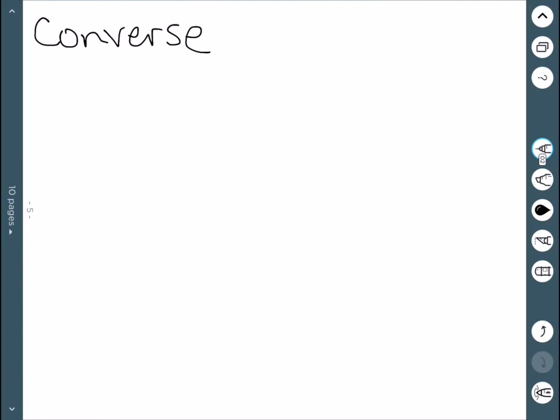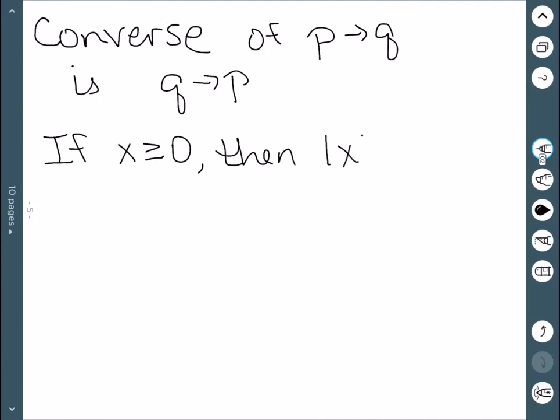Next, we're going to look at a couple of different variations of this. The first is the converse. So the converse of if P then Q is Q then P. So switching the order is the converse. So for example, we can have this statement that says if x is greater than or equal to zero, then the absolute value of x is equal to x. So the converse of that would be if the absolute value of x is equal to x, then x is greater than or equal to zero.